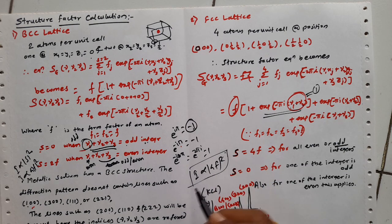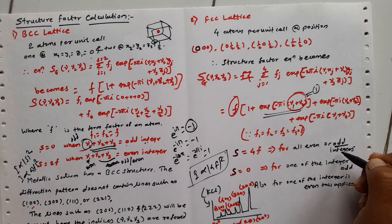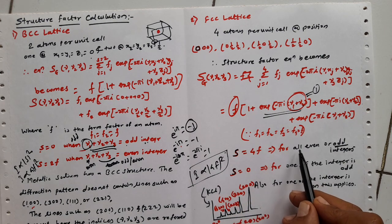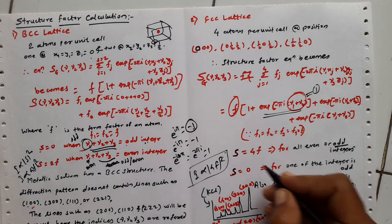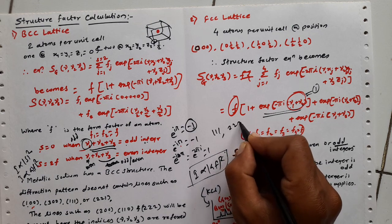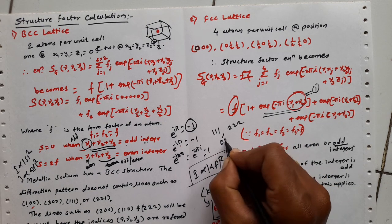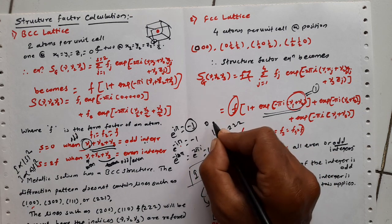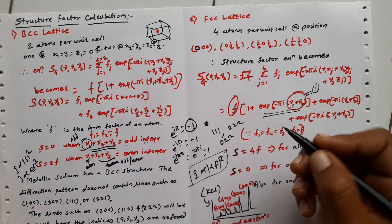Wherever h,k,l planes appear in the diffraction pattern where all indices are even or all indices are odd — such as (111), (222), or (022) — we get non-zero intensity. When all are odd or all are even, all combinations nu1+nu2, nu2+nu3, nu1+nu3 are even, giving a structure factor of 4F, and intensity proportional to 16F².